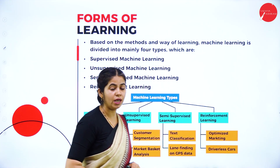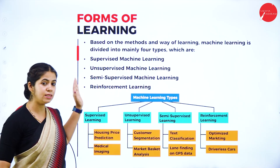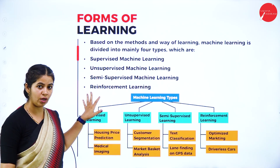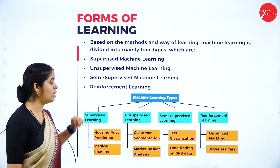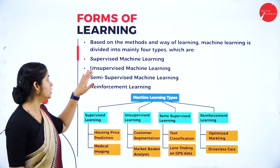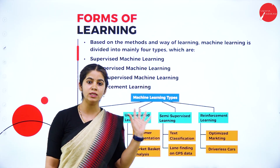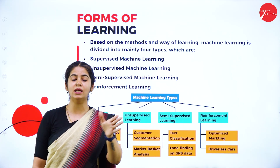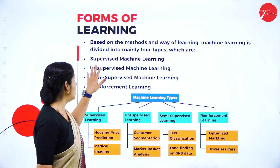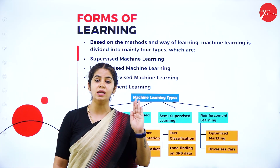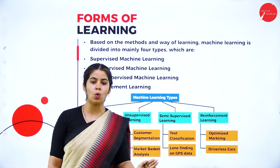How many forms of machine learning do we have? We have categorized machine learning mainly into four categories: supervised machine learning, unsupervised, semi-supervised, and reinforcement. As the name itself indicates, in supervised machine learning someone is there to supervise — what is the input given and what should be the output, and whether the output is correct. In unsupervised, no one is monitoring the learning of the machine.